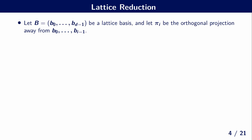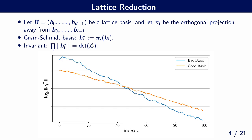Lattice reduction is the process of turning a basis that consists of long and not-so-orthogonal vectors into a good basis of short and almost-orthogonal vectors. Given a basis B consisting of vectors B_0 up to B_{d-1}, we first define the projection P_i away from the first i basis vectors. This allows us to define the so-called Gram-Schmidt basis, where B_i* is given by B_i projected away from the previous basis elements. Note the invariant that the product of the norms of all Gram-Schmidt basis elements equals the determinant of the lattice.